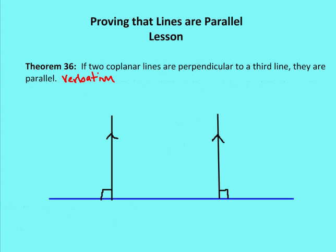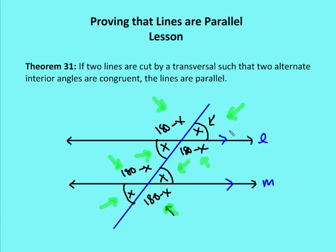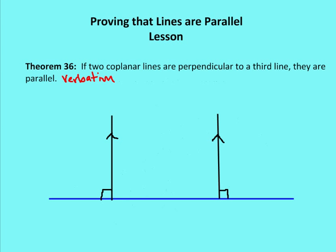Theorem 36: if two coplanar lines are perpendicular to a third line, then they are parallel. We can go through the same process as before, but now establishing X as 90 degrees. If two coplanar lines are each perpendicular to the same third line, they are going to be parallel. And that's it — thanks for paying attention.